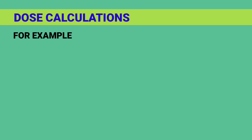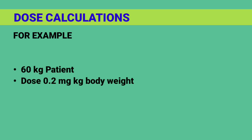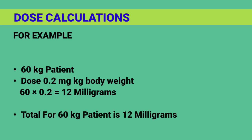Diazepam dose calculation example: For a 60 kg patient at a dose of 0.2 mg/kg body weight — 60 × 0.2 mg — the total dose for a 60 kg patient is 12 mg.